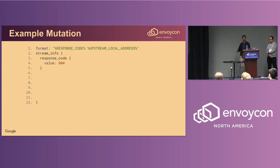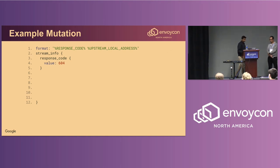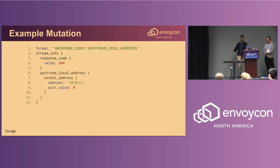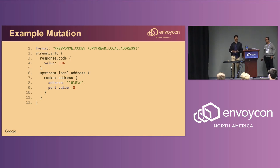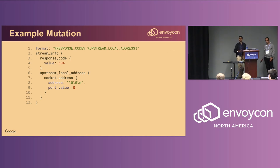For example, a possible mutation might take two access log formatting directives and append them into one string. It could copy over the response code but flip a single bit, resulting in an invalid HTTP code. It might mutate the address, putting in special characters or zeroing out the port value. This input looks nonsensical to us as developers, but it's still a valid input. The fuzzing engine will pass this to your fuzzer, which should ensure the access logger handles it gracefully without crashes or undefined behavior.